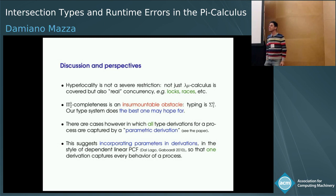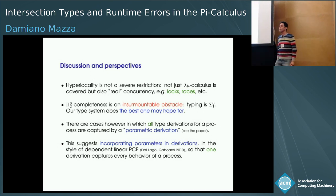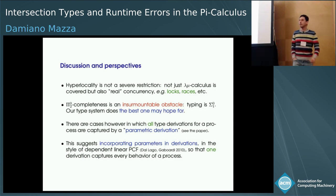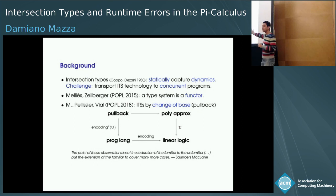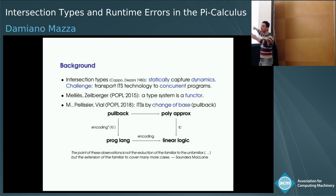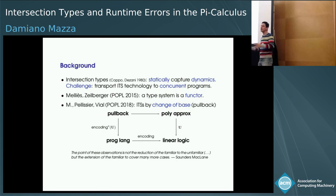Q: For the lambda calculus, non-idempotent intersection type systems are a way to reason syntactically on the relational model — is there something similar here? A: Yes, absolutely. You could see this as exactly that. There is linear logic — actually differential linear logic proof nets — and that's the pi calculus. When you pull back, you get those proof nets that encode the processes, decorated with the relational semantics. The universal intersection type system in this case is essentially the relational semantics. So it's exactly what you're saying.